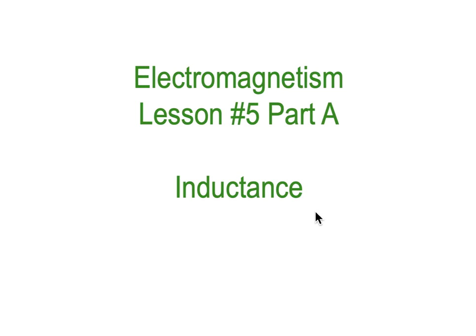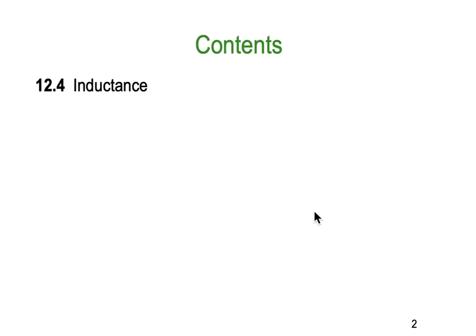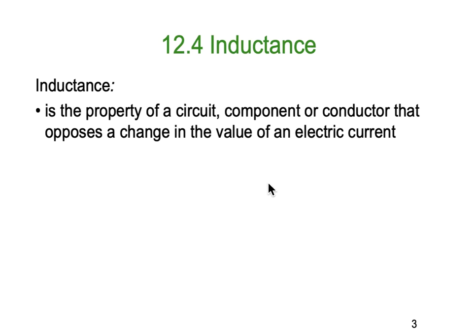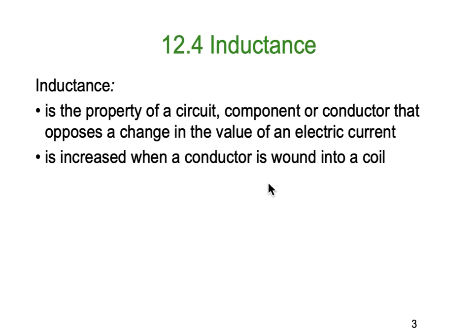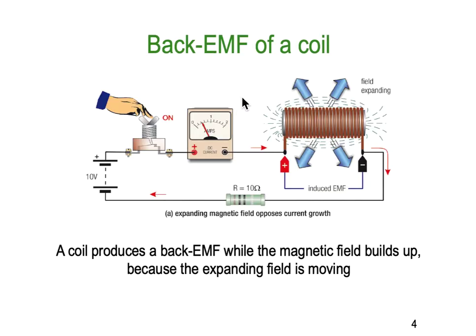Hello, it's Dr. Ken here with you again. This is Electromagnetism lesson number five, Part A. We are looking at inductance — if you're following along in the textbook, it's chapter 12.4. Inductance is a property of a circuit component or conductor that opposes a change in the value of an electrical current, and it increases when the conductor is wound into a coil, concentrating the magnetic field.